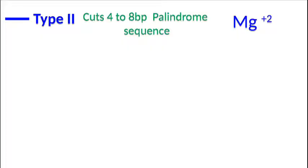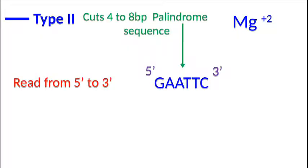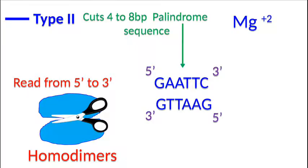A palindromic sequence means the sequence reads the same when you read from both directions. For example, Type 2 restriction enzyme EcoR1 identifies palindromic sequence GAATTC. These enzymes often function as homodimers.